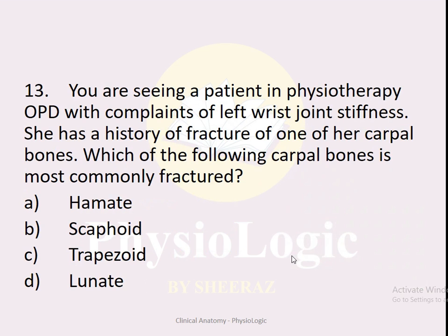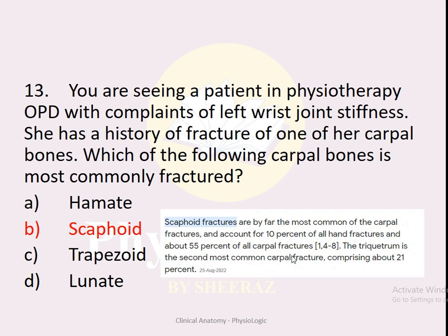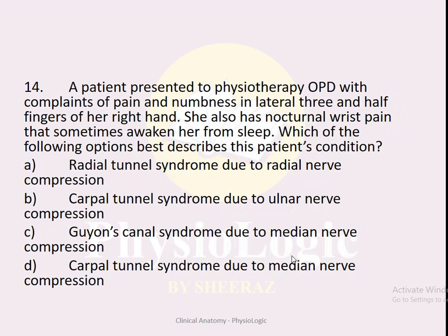MCQ number thirteen: A patient has left wrist joint stiffness with a history of fracture of a carpal bone. Which carpal bone is most commonly fractured? Options: A — hamate, B — scaphoid, C — trapezoid, D — lunate. The correct option is B — scaphoid. Scaphoid fractures are the most common fractures of the carpal bones.